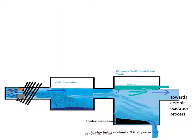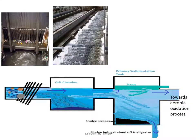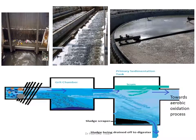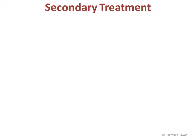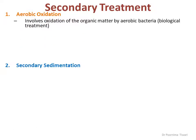This slide shows the primary treatment: the screen with sewage flowing through it, the grit chamber, and the primary sedimentation tank where scum is formed and removed by the scum skimmer. In secondary treatment, the first step is aerobic oxidation of the influent from the primary sedimentation tank, followed by secondary sedimentation. Aerobic oxidation involves biological treatment of the influent using aerobic bacteria to oxidize the organic matter.